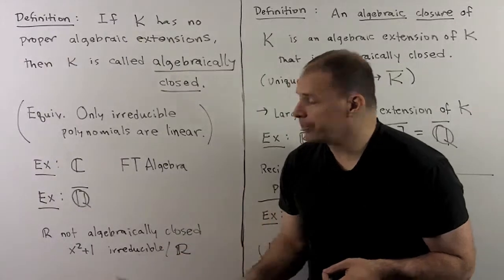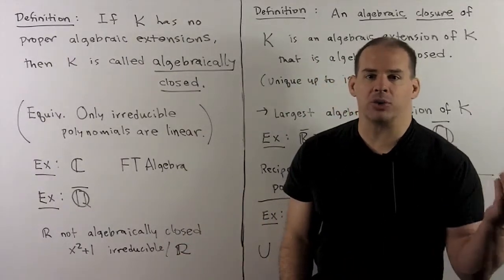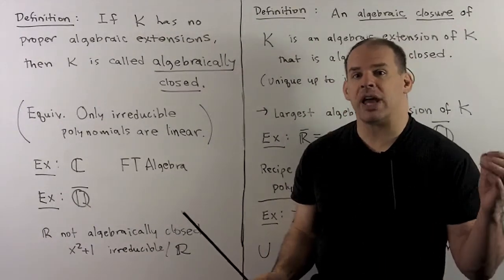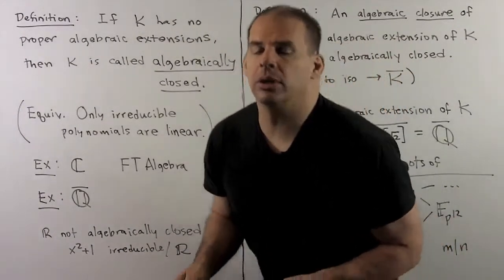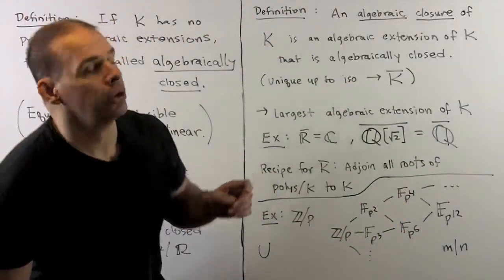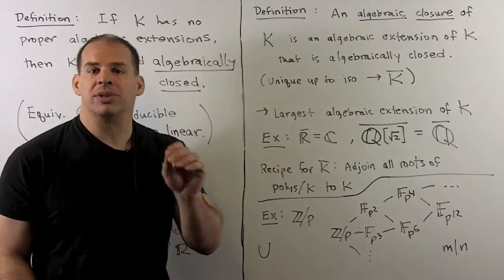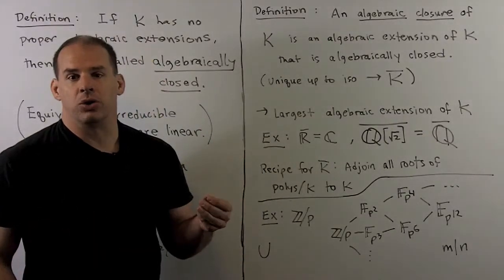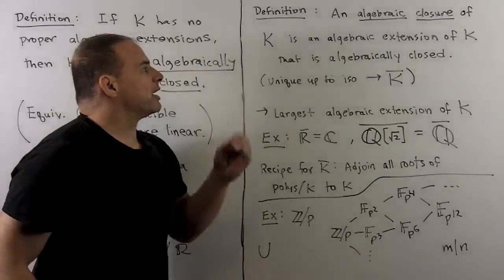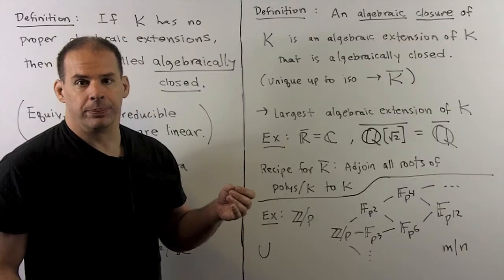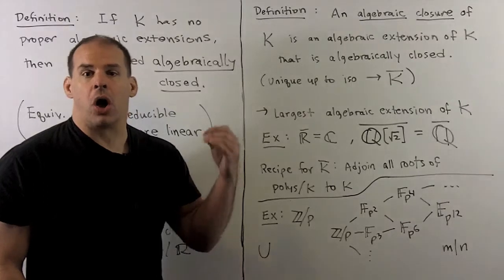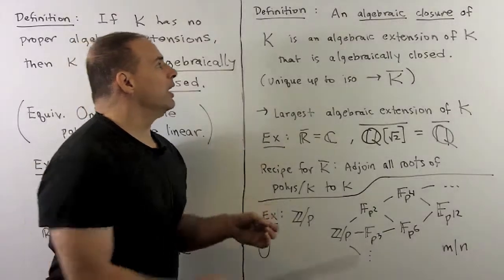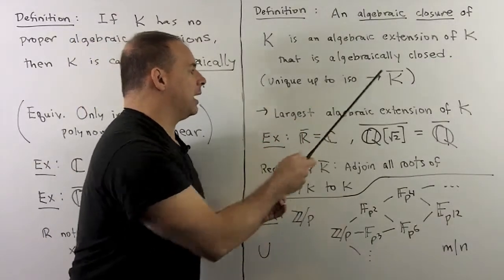On the other hand, we have the reals. If we take the polynomial x squared plus 1 over the reals, that's irreducible but not linear. So the reals are not algebraically closed. For fields that are not algebraically closed, we can always attach a field that is. Definition: an algebraic closure of k is an algebraic extension of k that is algebraically closed. Algebraic closures always exist and are unique up to isomorphism, so we usually refer to the algebraic closure of k and denote it by k-bar.